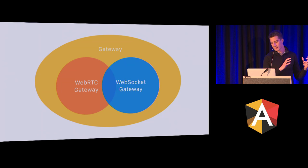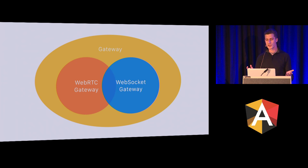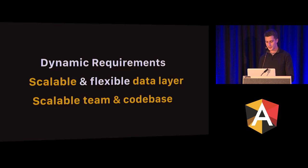For example, we have a WebRTC gateway and a WebSocket gateway. There are a couple of common things — we're using them for communication, we have a data stream, and we have push messages. So we can implement this general functionality into the gateway and leave the implementation details for the WebRTC gateway and the WebSocket gateway implementations.